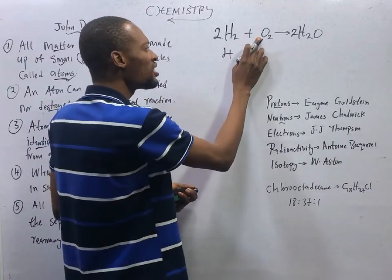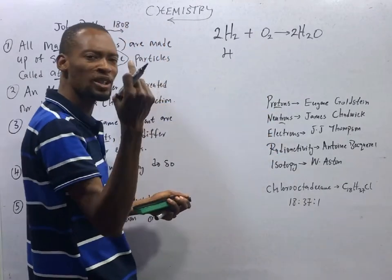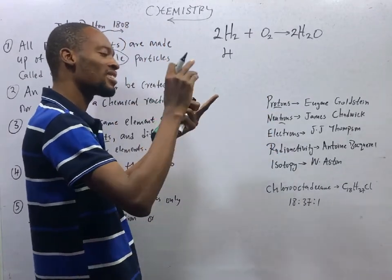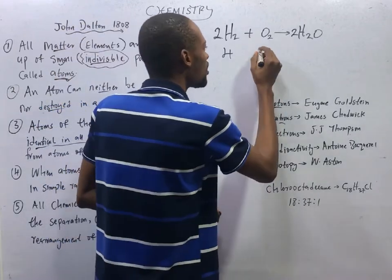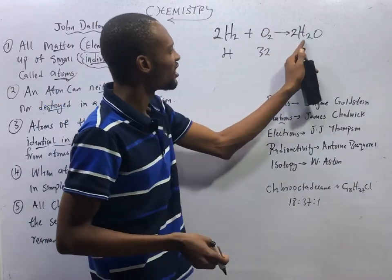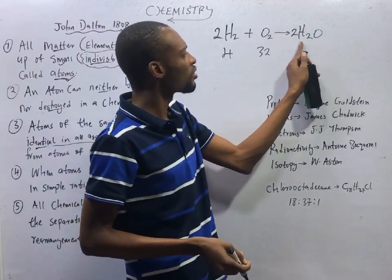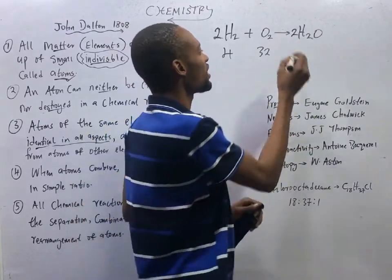The mass of oxygen is 16. But we have one molecule of oxygen, which is 2 atoms of oxygen. 1 atom of oxygen has a mass of 16 grams. 2 atoms will have 32 grams. Water, 16 plus 2, that is 18, times 2, that is 36.